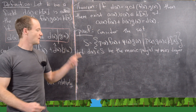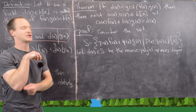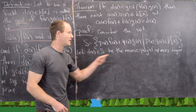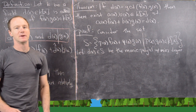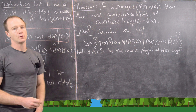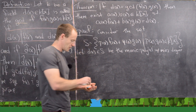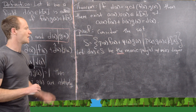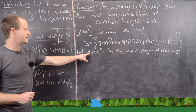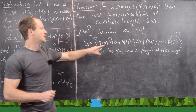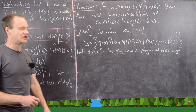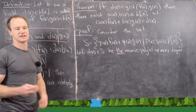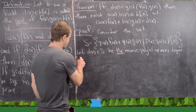This observation sets up the proof nicely. We let D(X) be the monic polynomial in S with minimum degree — uniqueness allows us to say 'the' rather than 'a'. Now we want to show that D(X) divides F(X) and D(X) divides G(X). We'll only prove it divides F(X), since proving it divides G(X) is very similar.